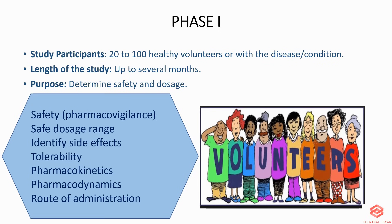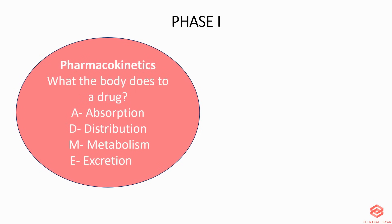Phase 1 includes safety studies or pharmacovigilance, safe dose range — the dose which is usually a fraction of the dose that causes harm in animal testing — and identifying side effects, tolerability, pharmacokinetics, pharmacodynamics, and route of administration. Pharmacokinetics is described as what the body does to the drug. It refers to the movement of a drug into, through, and out of the body, and involves ADME: absorption, distribution, metabolism, and excretion.